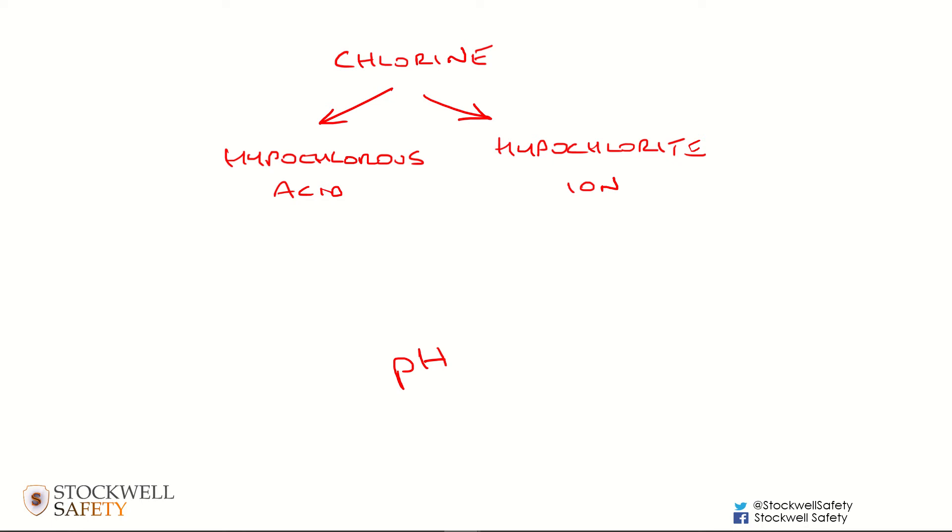For example, if you had a pH more towards 8—if you allow the pH level to go too high—what will happen is that the chlorine will end up dissociating and becoming hypochlorite ion. That's what happens when the pH goes too high.